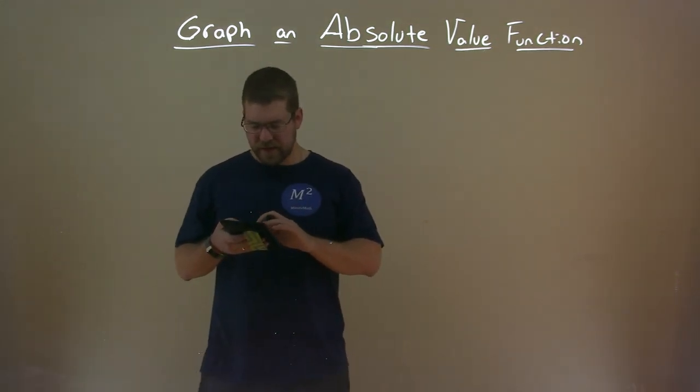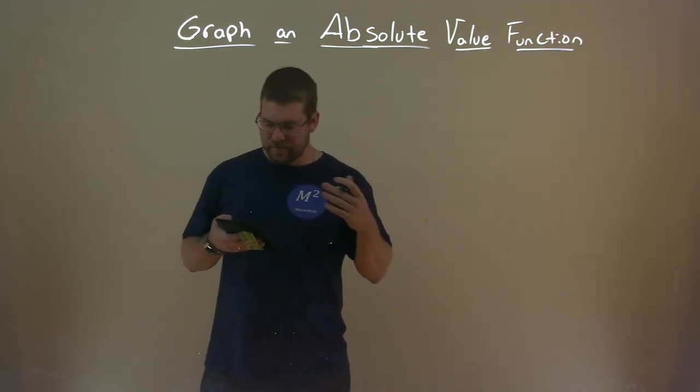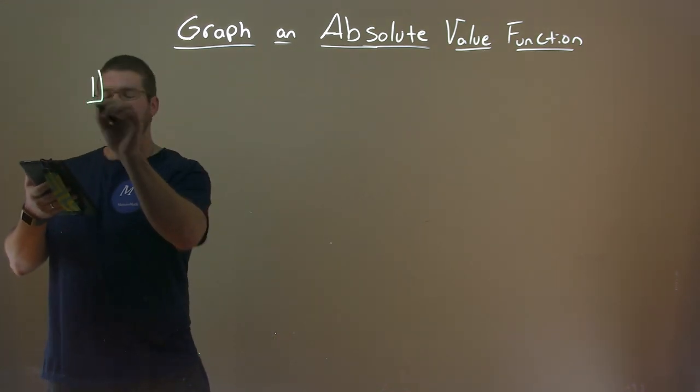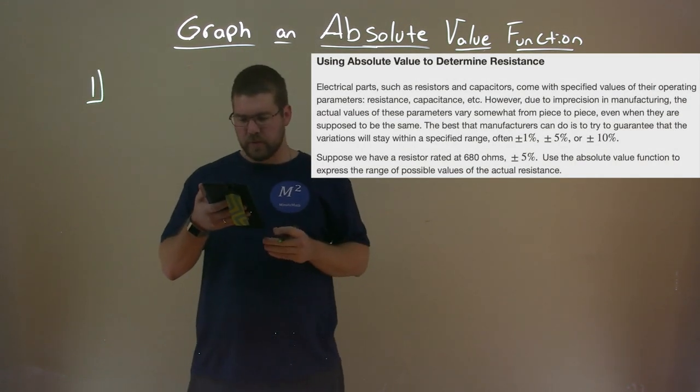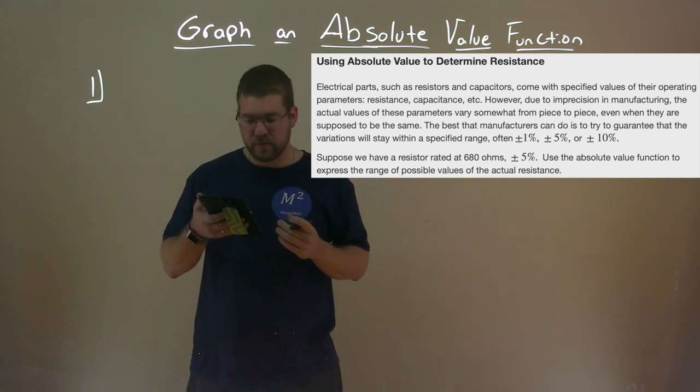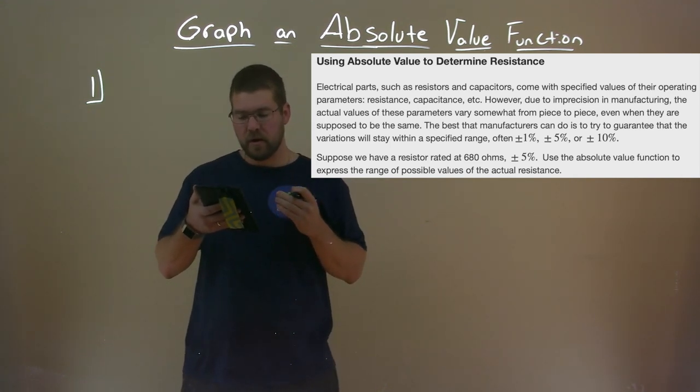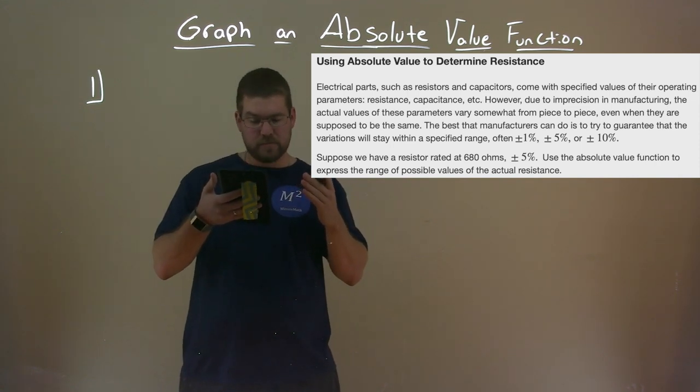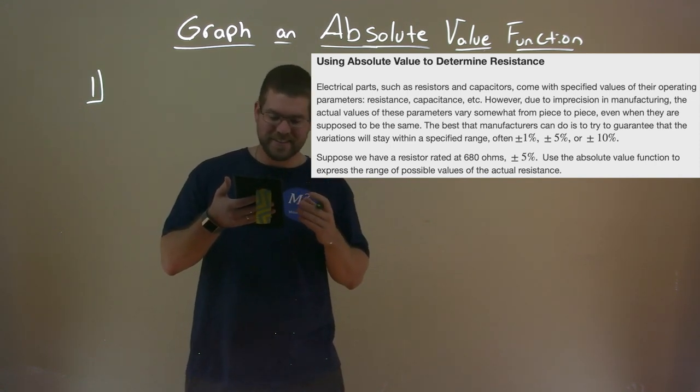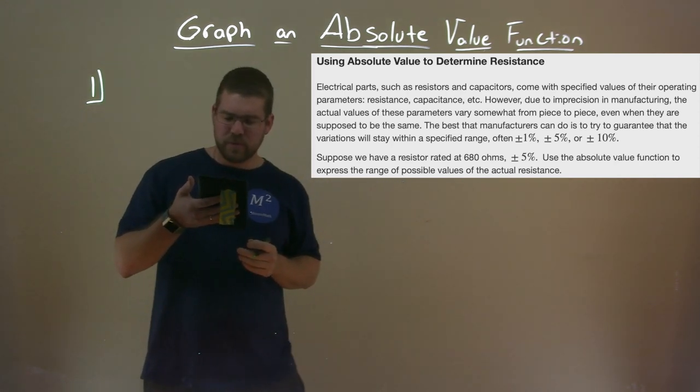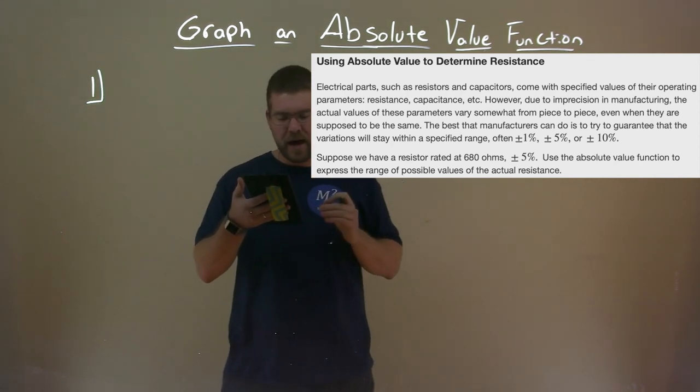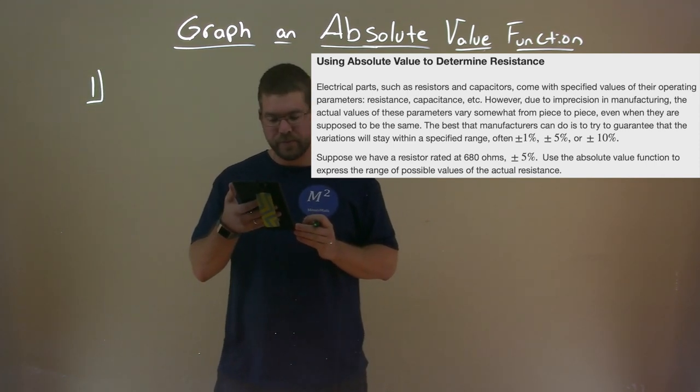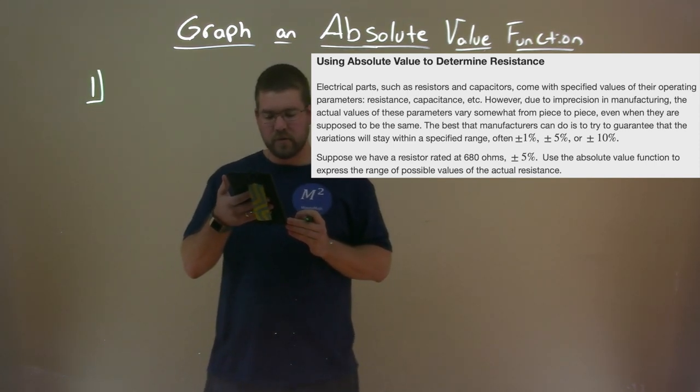So let's understand an absolute value function with a word problem. Electrical parts, such as resistors and capacitors, come with specified values of their operating parameters - resistance, capacitance, etc. However, due to imprecision in manufacturing, the actual values of these parameters vary somewhat from piece to piece, even when they are supposed to be the same.